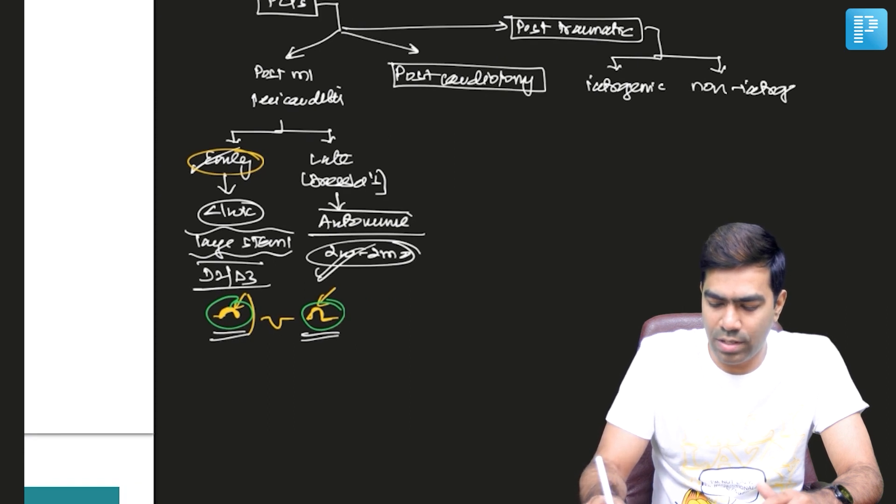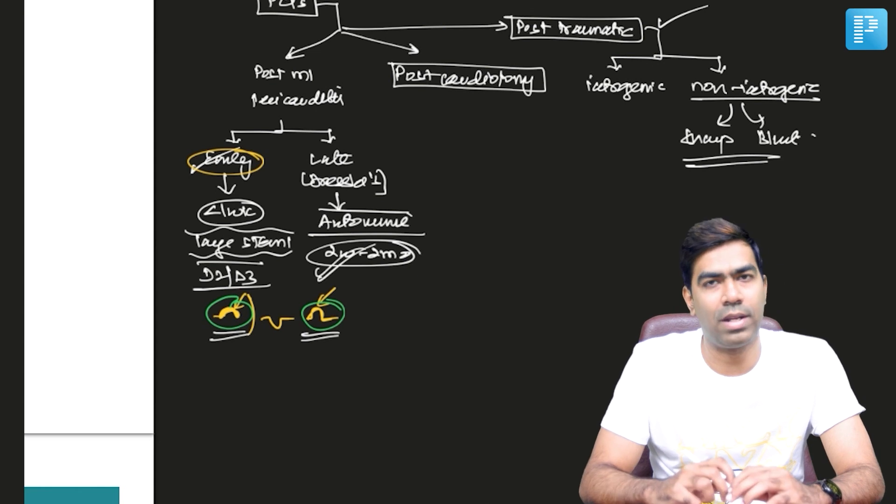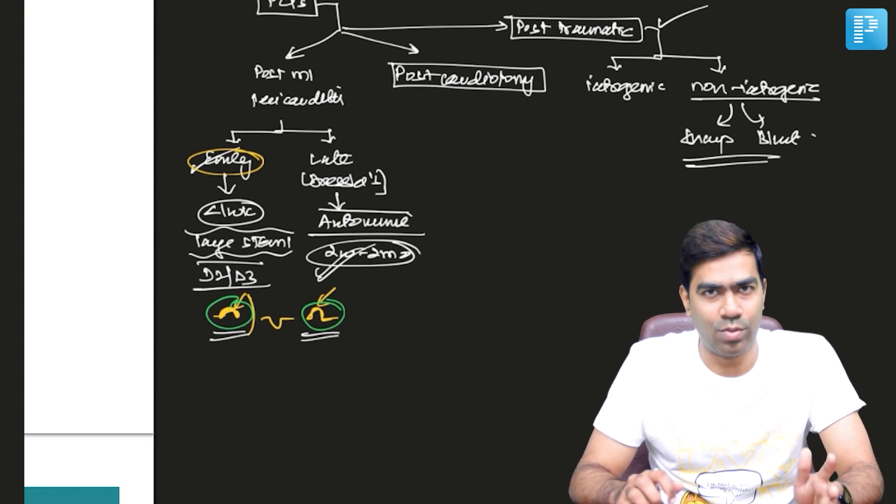That's called post-traumatic pericarditis, which could be an iatrogenic trauma or a non-iatrogenic trauma. Non-iatrogenic trauma could be a sharp injury to the chest wall or could be a blunt injury to the chest wall as well.